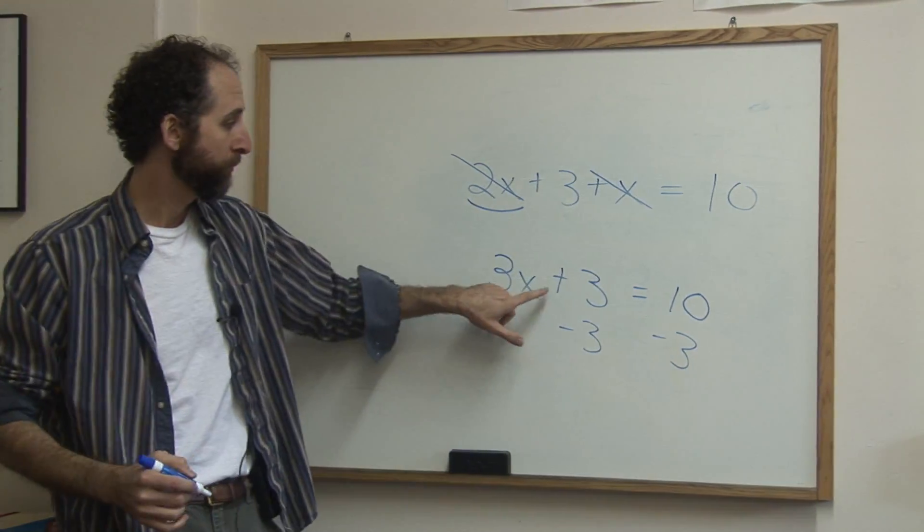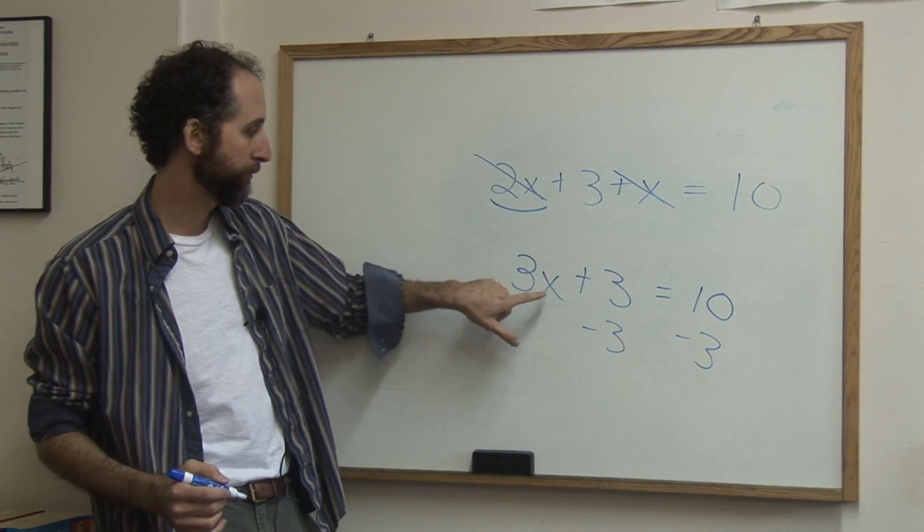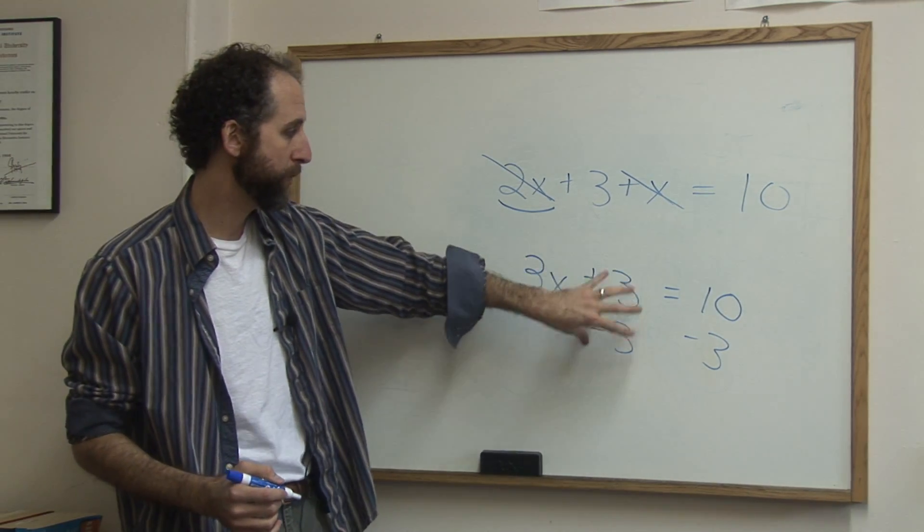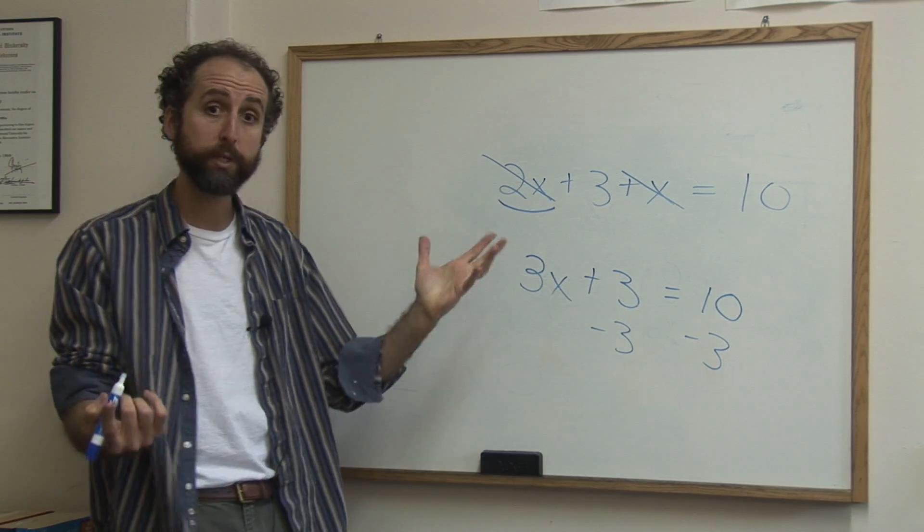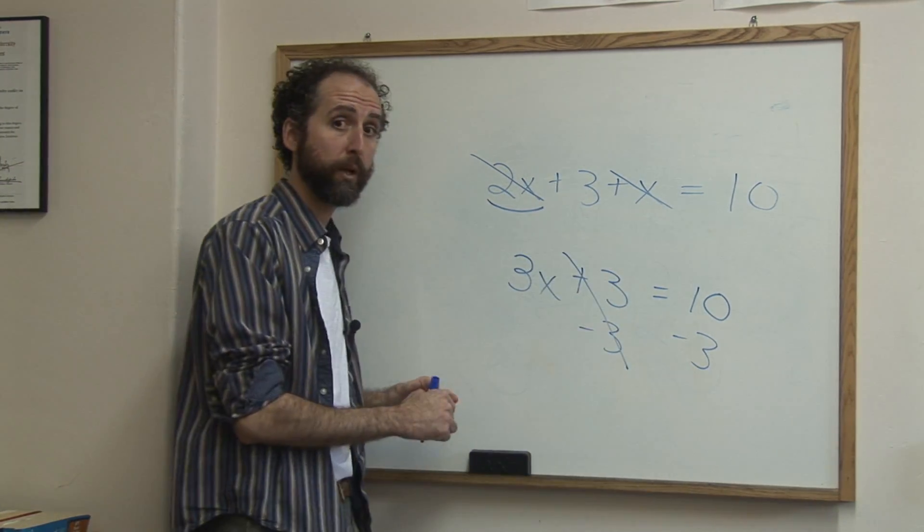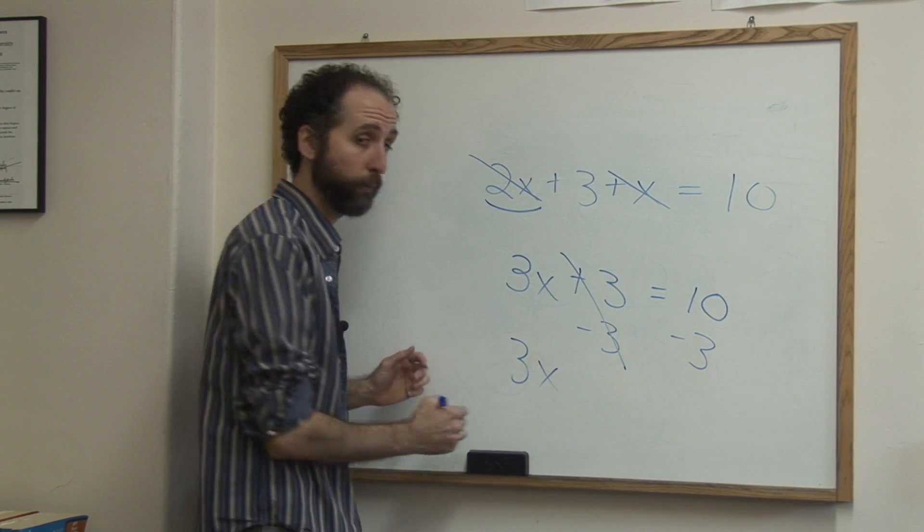That's because the way to eliminate a number from being near the x is we're going to do its inverse. So the opposite of plus 3 is minus 3. And the reason we want to do the inverse is positive 3 minus 3 cancels. That's why we did it. So now we have 3x alone. We're getting there.